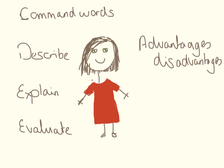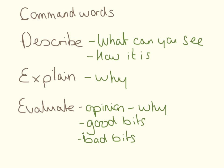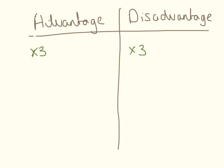Advantages and disadvantages — this is a great question if it comes up. I'll come on to that a bit more in a couple of slides time. So: describe — what can you see, how is it? Explain — why is it like that? Evaluate — you need to give an opinion, say why, and say the good bits and the bad bits. If an advantages and disadvantages question comes up, what you can do is draw a table and divide your page into two. If it's going to be a six mark question, make sure you say three good things and three bad things about it.